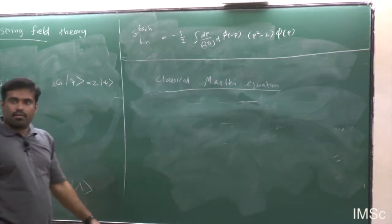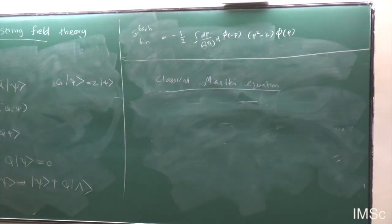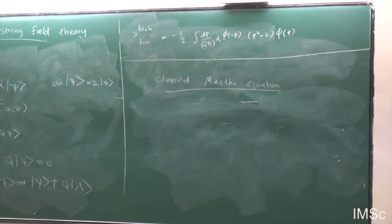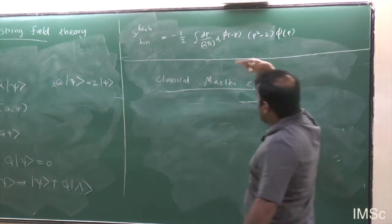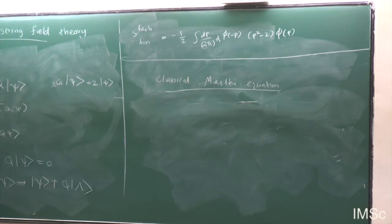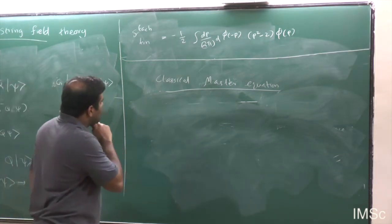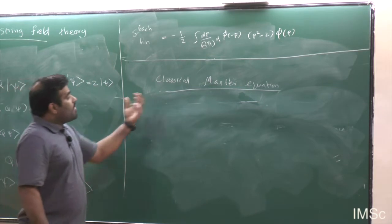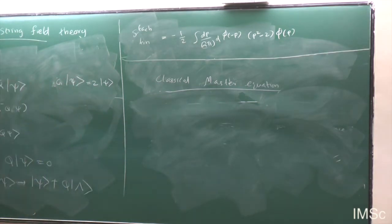So far we were just discussing the classical kinetic term for string field theory. Now we have to construct the BV analog of the classical kinetic term — that means we have to identify the field and anti-field. We know what the target space fields are; now we want to identify the target space anti-fields.